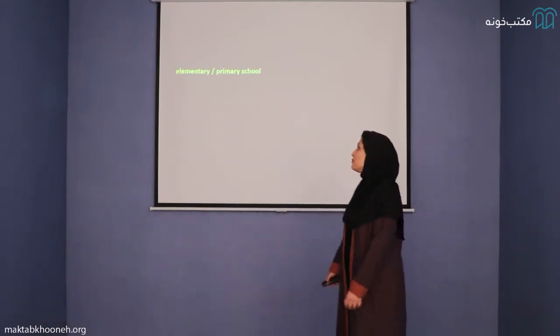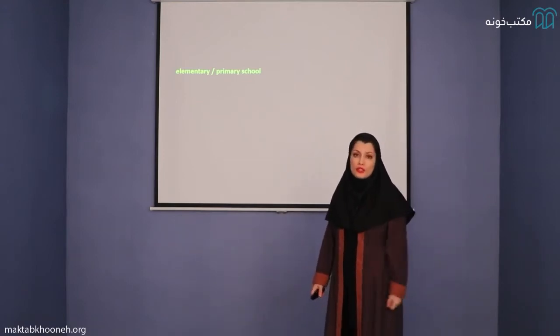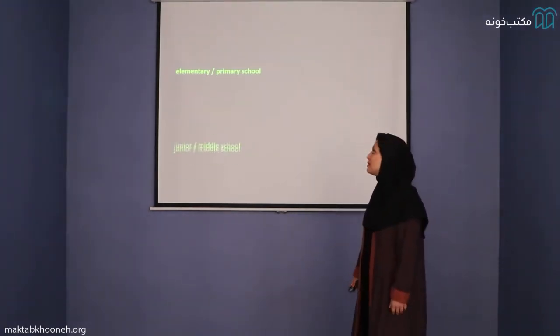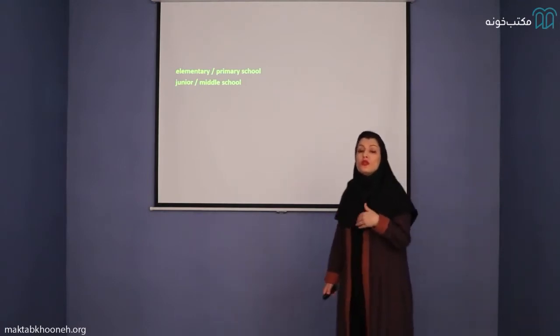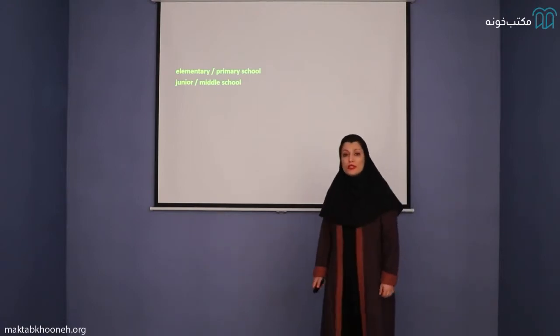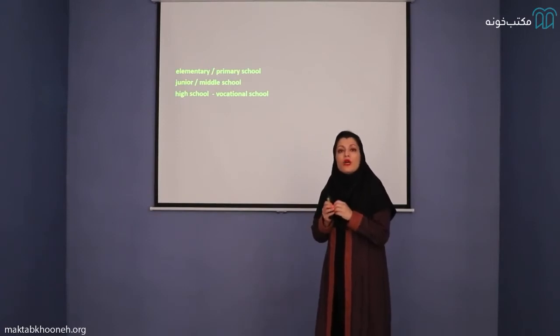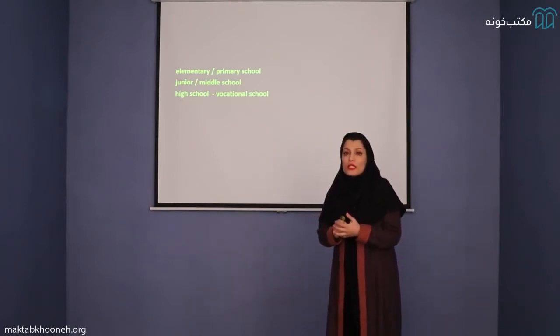When we start school, first we go to elementary or primary school for five years. After that, we study in junior school or middle school for three years. After that, we go to high school for four years. But depending on the educational system of the country, the whole system is different. For example, in some countries, you go to elementary school for six years and high school or secondary school for another six years.